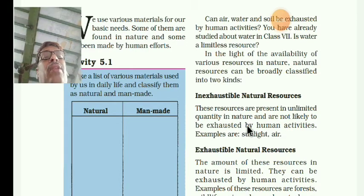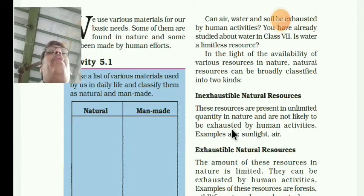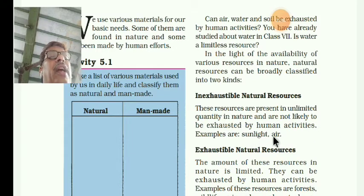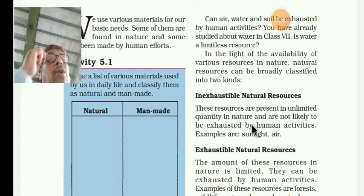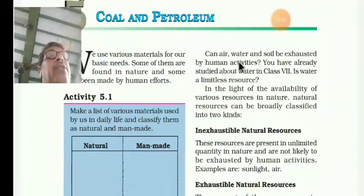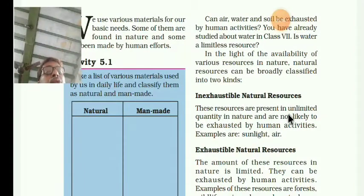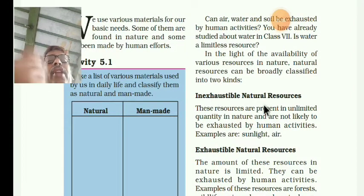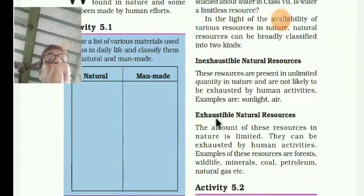After using them, some will not be exhausted — they will not become empty by human activities. For example, sunlight, air, water — these are all included in the inexhaustible natural resources. They are called renewable, continuously available resources. Exhaustible means non-renewable.